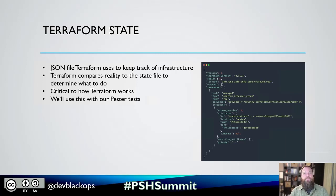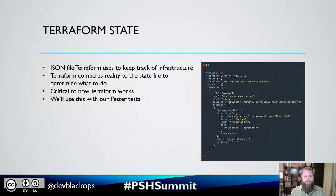A critical piece of Terraform to understand for our tests is the Terraform state file. At a high level, it's a JSON file that Terraform uses to keep track of everything it's done with the infrastructure. If you told Terraform to create a resource group, a representation of that resource group and its settings will be in the state file. Terraform uses it to compare reality — what's in Azure — with what you've told it to do in your code, then reconciles and decides what to do. We need to understand it because we're going to inspect that state file in Pester.